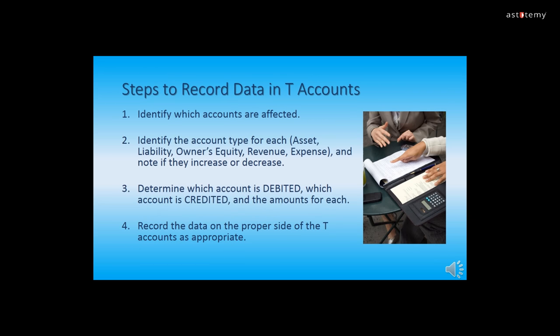Now we are going to review the steps to record data in the T-Accounts. The first step is to identify which accounts are affected — in the exercises we will be using just two accounts per transaction to simplify the learning process. The second step is to identify the account type for each — whether it's an asset, liability, owner's equity, revenue, or expense — and note if they increase or decrease. We will have some accounts that both increase, some that both decrease, and others that increase and decrease. The third step is to determine which account is debited, which account is credited, and the amounts for each. When working with two accounts, one is debited and the other must be credited. The fourth step is to record the data on the proper side of the T-Accounts as appropriate.